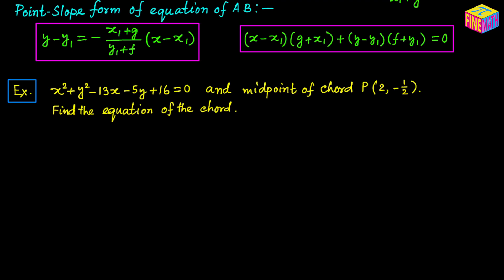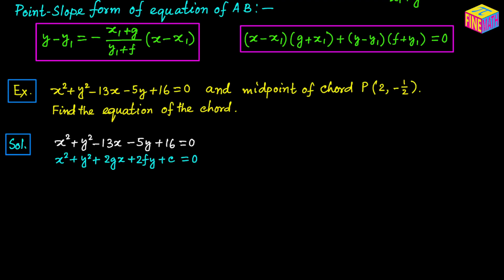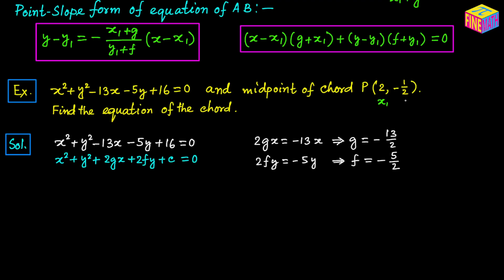The example gives the equation of the circle as x squared plus y squared minus 13x minus 5y plus 16 equals 0, and the coordinates of the midpoint of a chord as 2 comma negative 1 half. We need to find the equation of the chord. Comparing with the general form, 2gx equals negative 13x gives g equals negative 13 over 2, and 2fy equals negative 5y gives f equals negative 5 over 2. The midpoint coordinates mean x sub 1 equals 2 and y sub 1 equals negative 1 half.